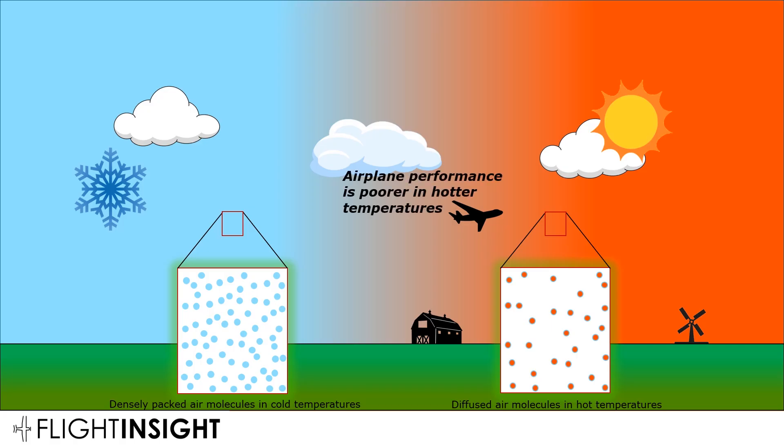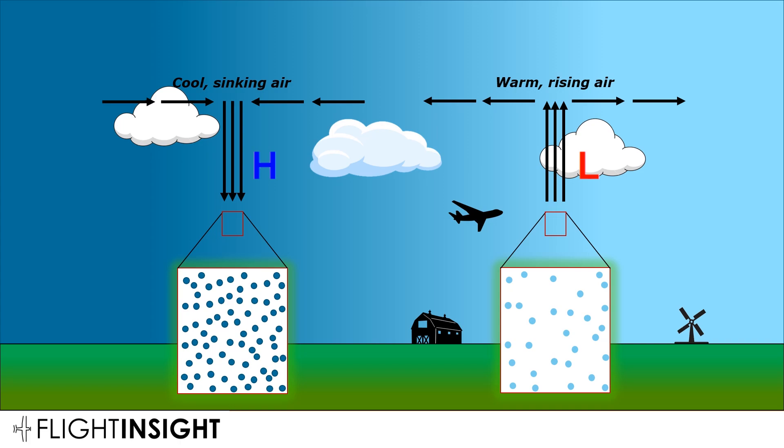Aircraft performance is poorer in hotter temperatures. Weather affects air density as well. A high pressure system brings cool air from up high and pulls it down toward the surface, compacting air down there. A low pressure system sucks air from the surface upwards, leaving the surface with lower density. Aircraft performance is poorer in lower atmospheric pressure. Water vapor in the air, or air humidity, also plays a role — more humid air is less dense and worse for performance, but we're going to ignore that in the discussion of pressure and density altitude.